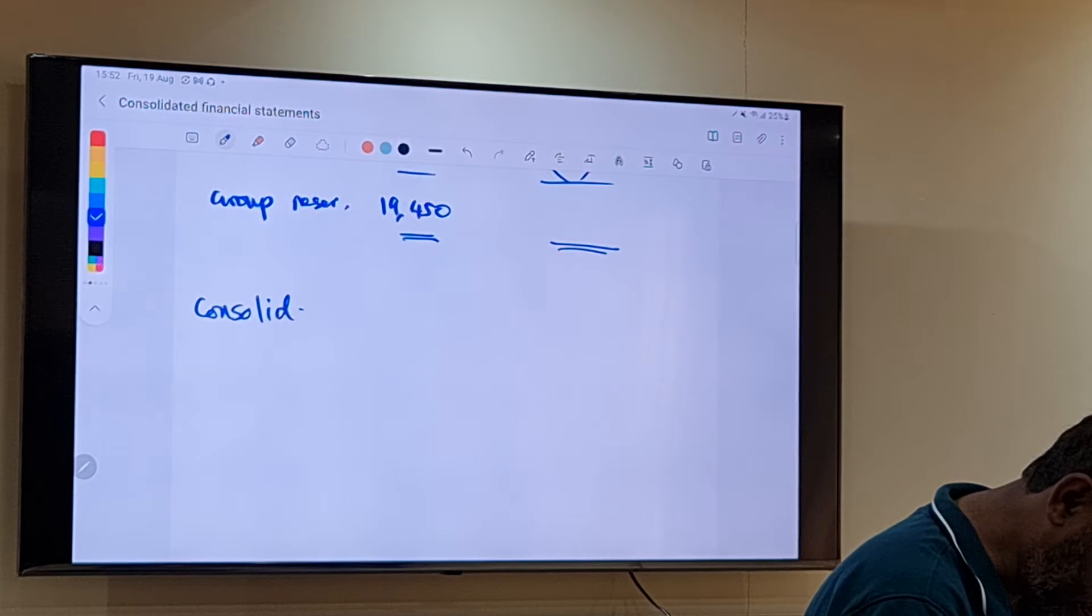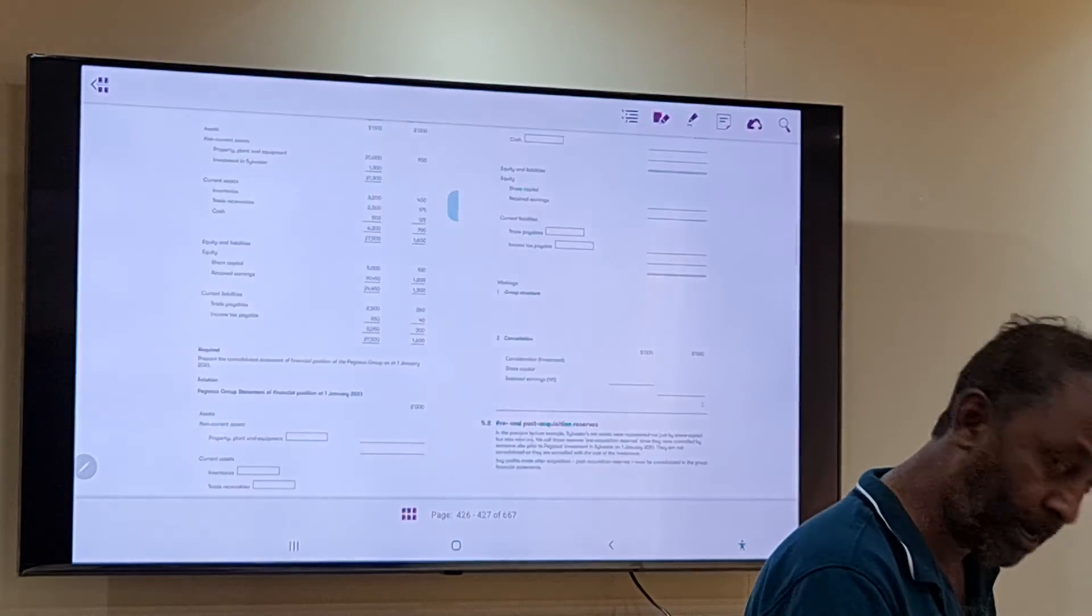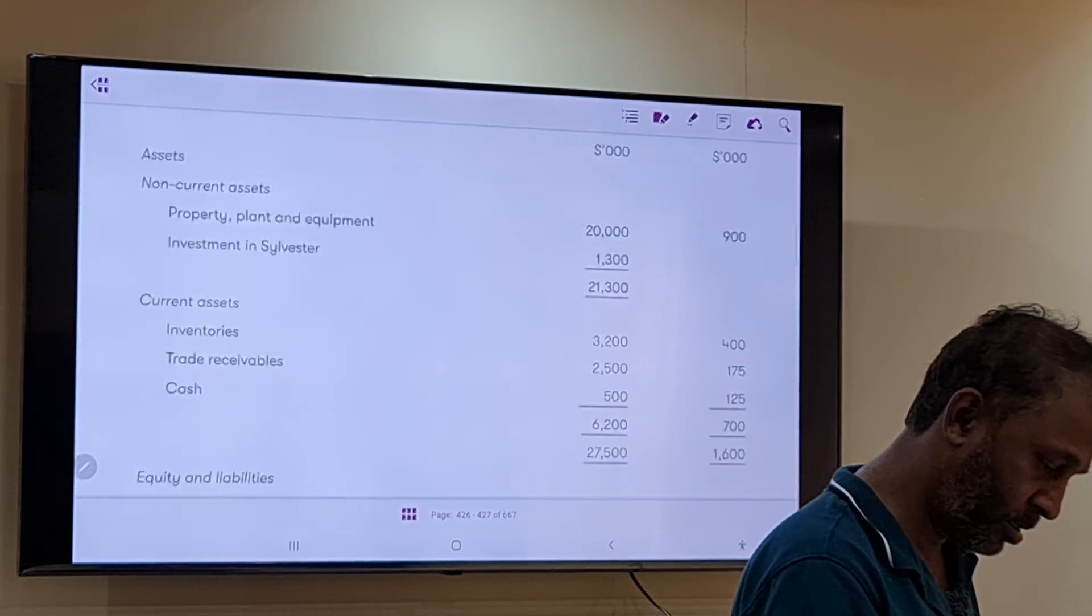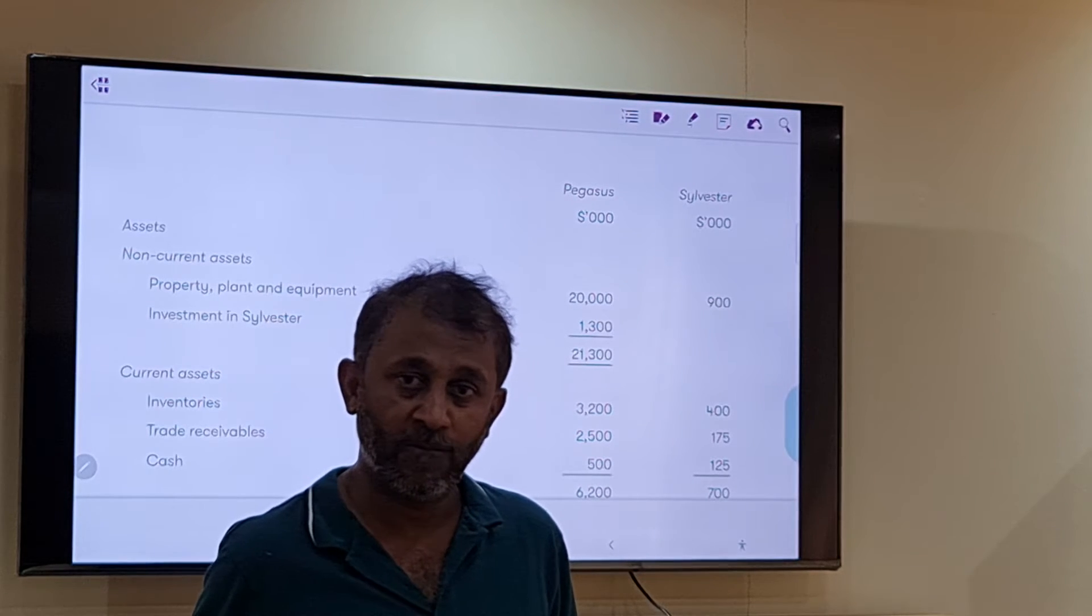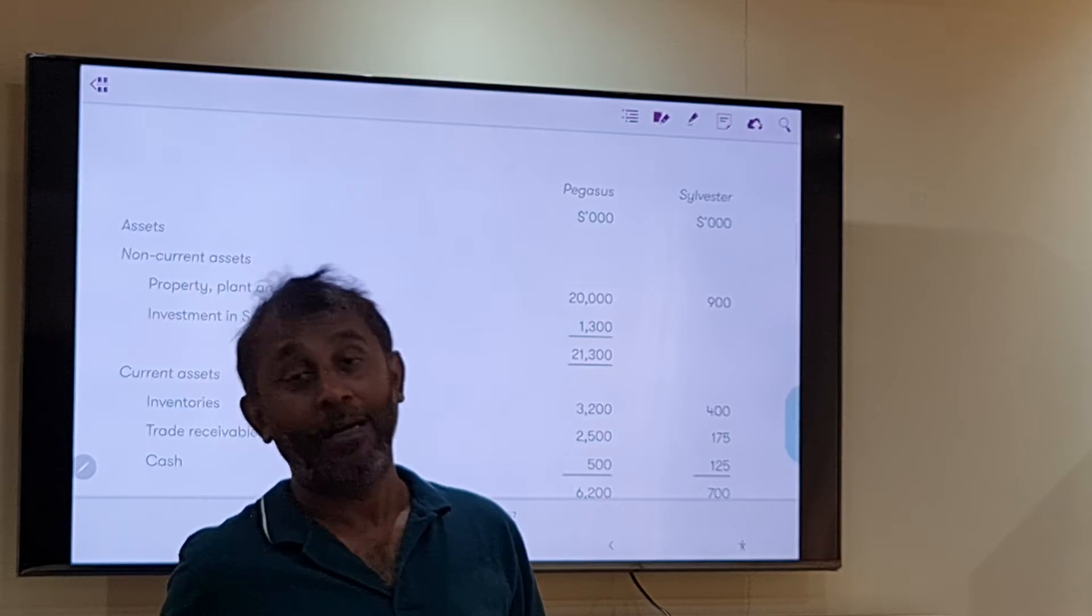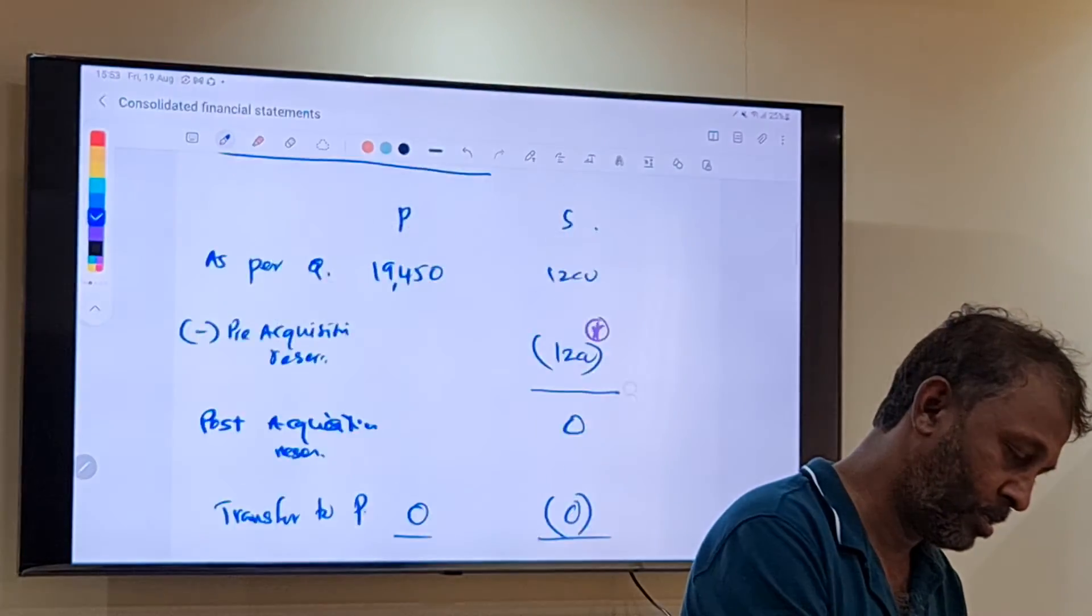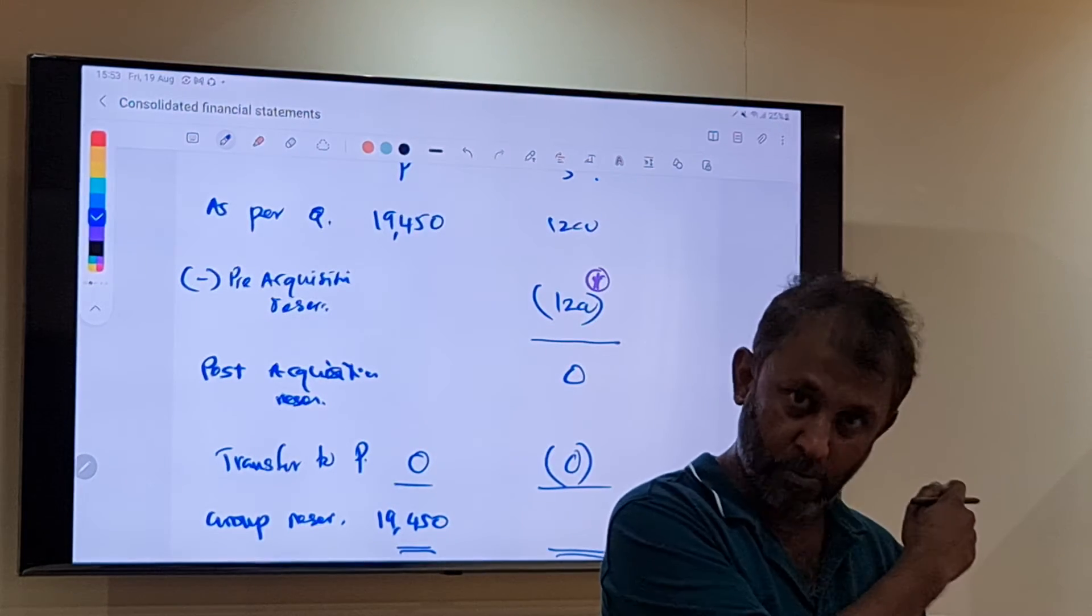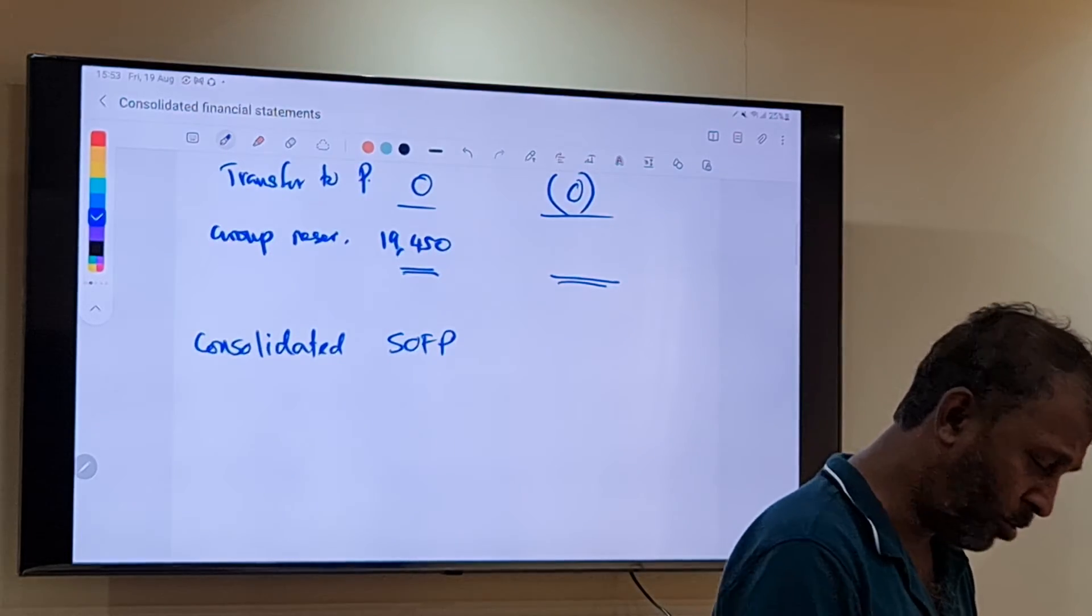You told that before pre-acquisition time, subsidiary has 1,200. Correct. In case if it is more than that? That's exactly what I told you. So that particular remaining amount will be post-acquisition and should be given to parent.